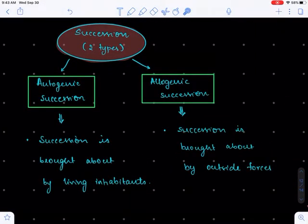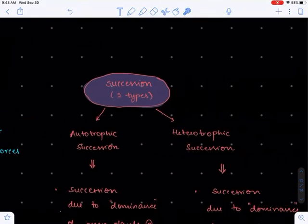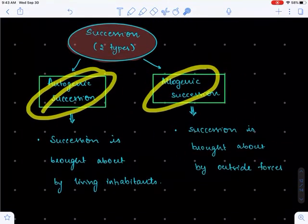Hello everyone, in this lecture let's study the other types of succession which include autogenic succession, allogenic succession, autotropic succession, and heterotrophic succession.